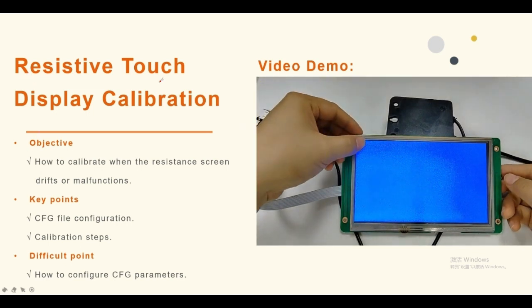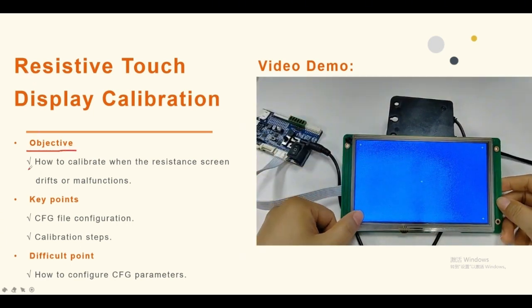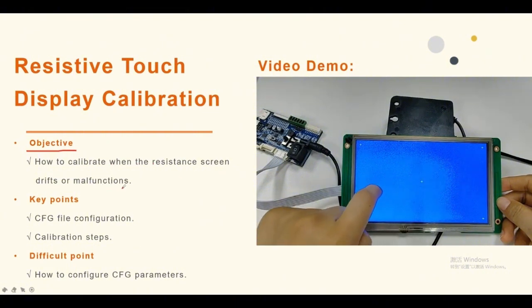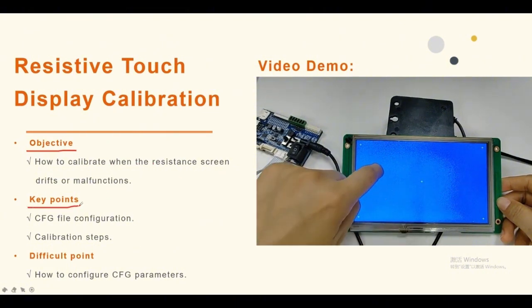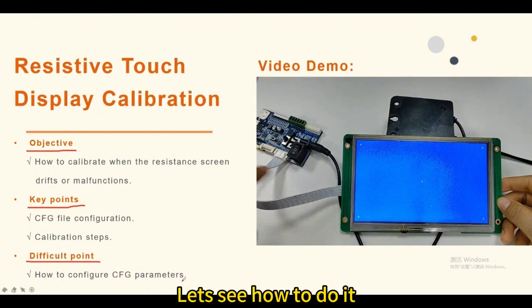Resistive Touch Display Calibration Objective: how to calibrate when the resistance screen drifts or malfunctions. Key points include CFG file configuration, calibration steps, and how to configure CFG parameters.